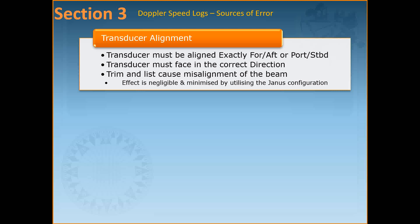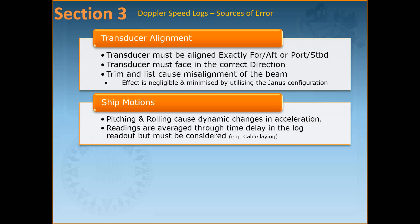Like any instrument dependent on signal transmission and reception, the Doppler log has errors and limitations. The first is transducer alignment — the acoustic energy beams should be exactly fore and aft, as also the port and starboard beams. Most transducers have an indicating arrow to be lined up with the vessel's forward direction and centerline at the bottom of the hull. There have been cases where transducers were fitted in reverse after dry dock, causing forward movement to be indicated by a negative number. Trim will also cause misalignment of the beam in the vertical plane, though these errors are generally small as the Janus configuration mitigates the effect.